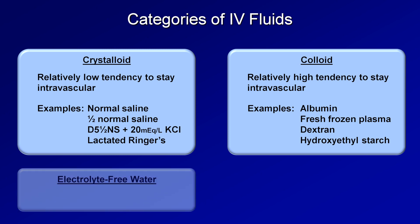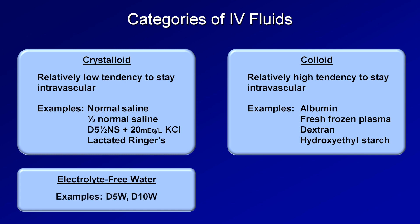Another category of fluids is electrolyte-free water. We never infuse pure water since that causes hemolysis, as shown in the previous video. Instead, this category includes various concentrations of sugar water, commonly referred to as D5W and D10W. Because electrolyte-free water fully distributes to all three fluid compartments, it's a terrible choice to expand intravascular volume, and is only used in situations of persistent hypoglycemia or to quickly bring down serum osmolarity when it is critically elevated.